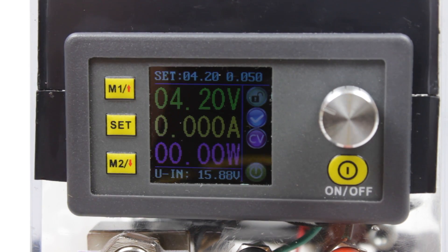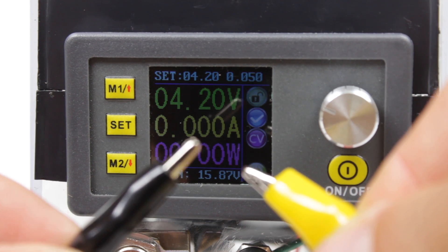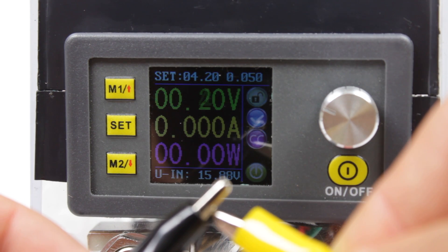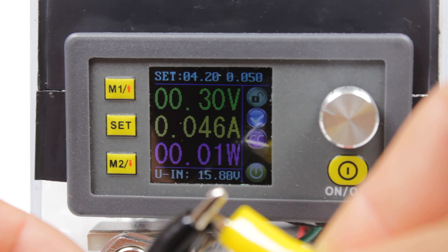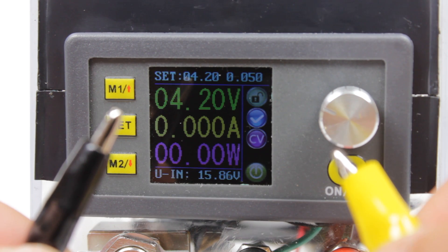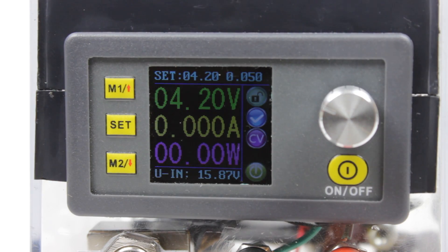Here you can see a demonstration of constant current regulation. I set it up for 0.05 amps and the display shows a little less than that, but I checked the current draw with my multimeter and it was exactly as I set it up - 0.05 amps.